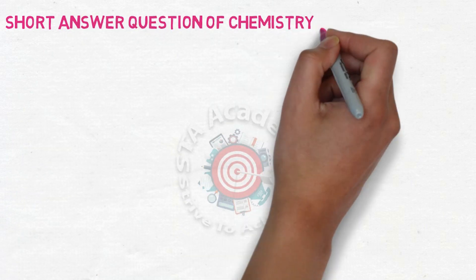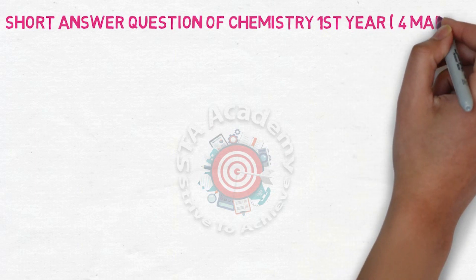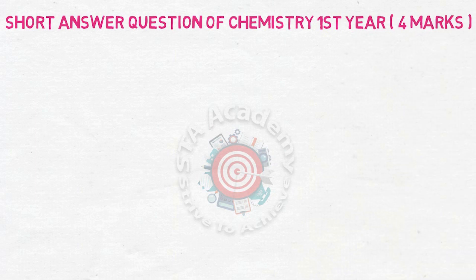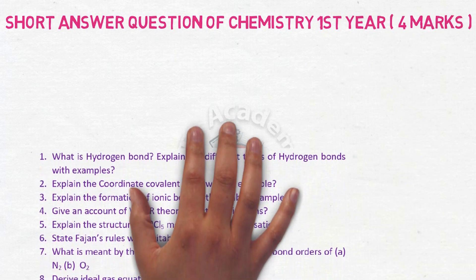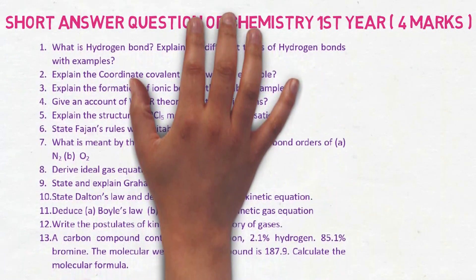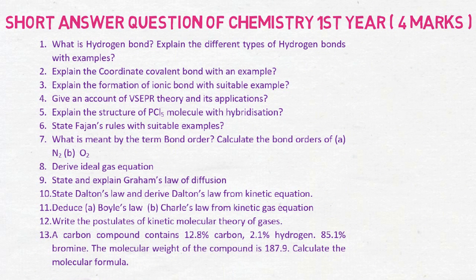I have given 35 SAQ questions that will give you maximum marks. We know that each SAQ carries 4 marks. The first is hydrogen bond. Second is coordinate covalent bond. Third is formation of ionic bond. Fourth is VSEPR theory. Fifth is PCl5 molecule. Sixth is Pauling's rules. Seventh is explain the term bond order.